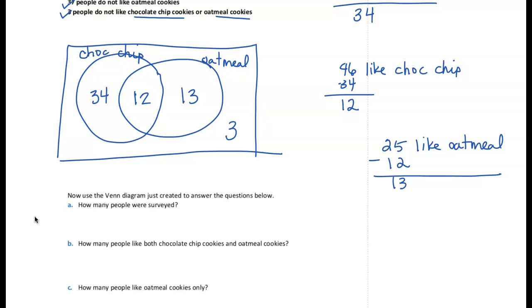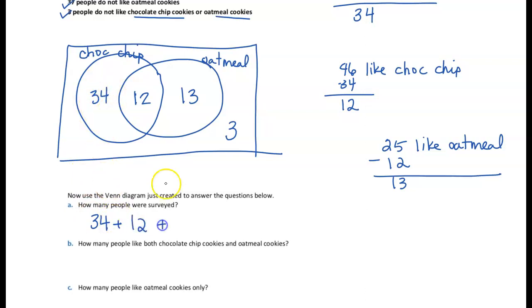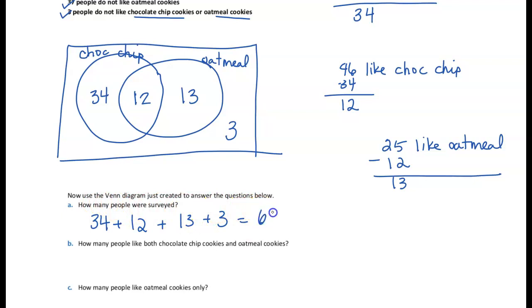How many people were surveyed? To answer this, we add up all the numbers in the Venn diagram: 34 on the left, 12 in the center, 13 on the right, and 3 on the outside. Adding all of that together gives us 62 total people surveyed.